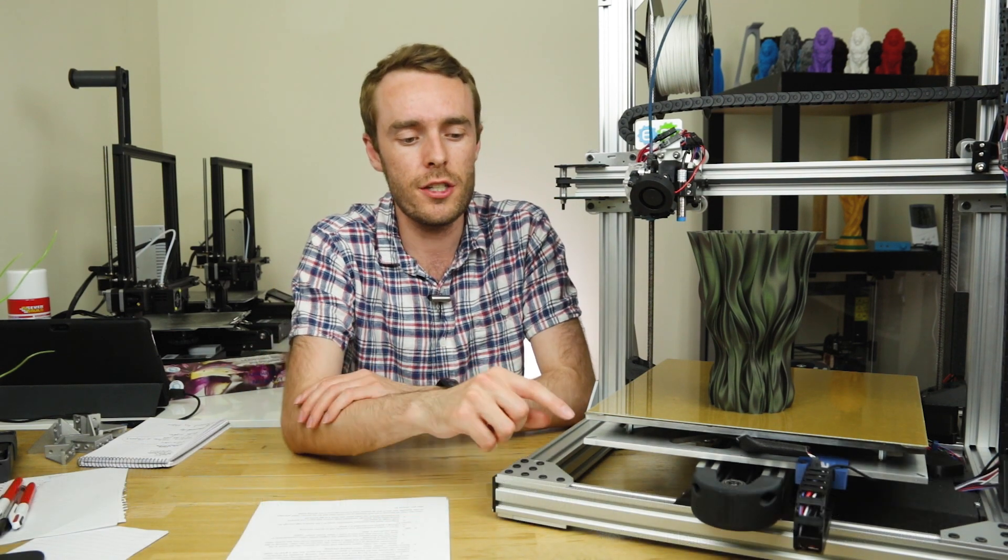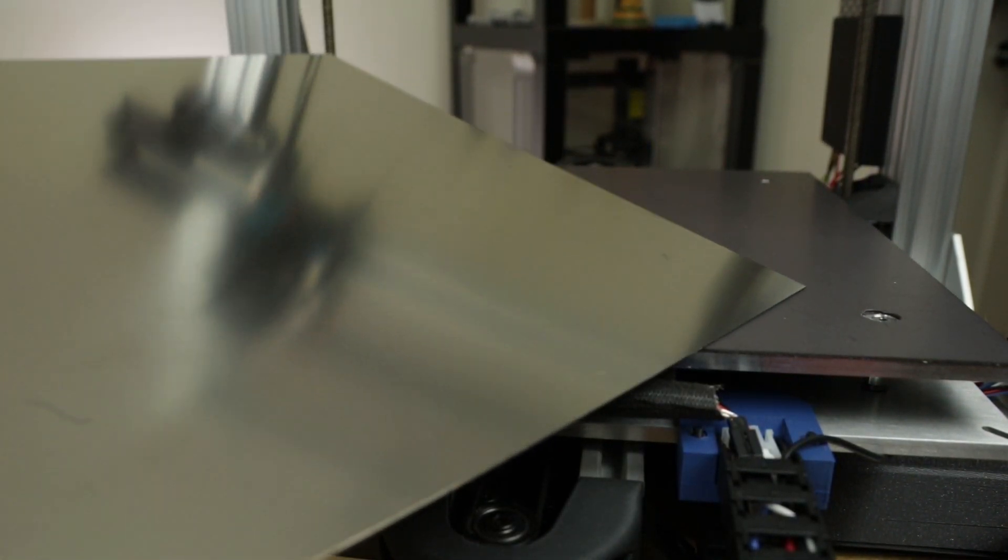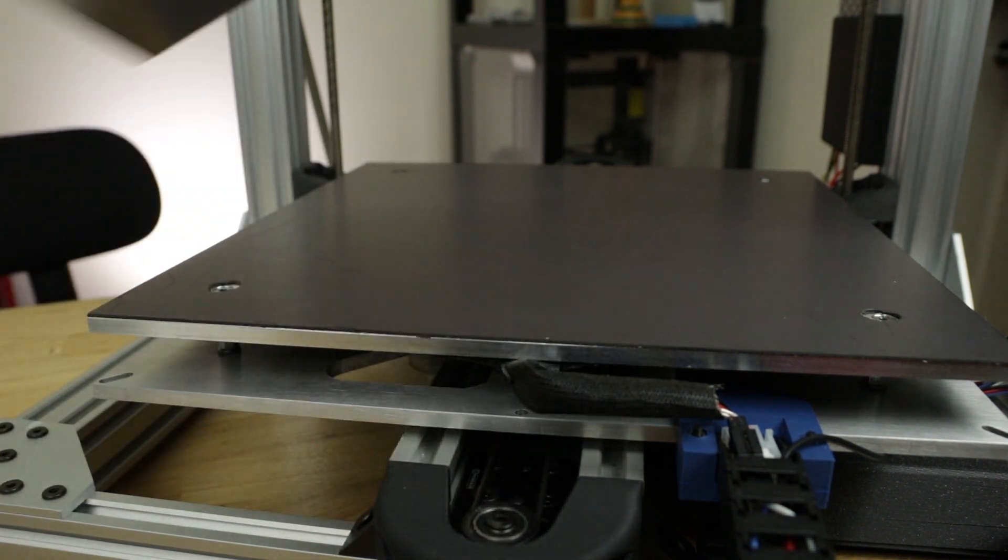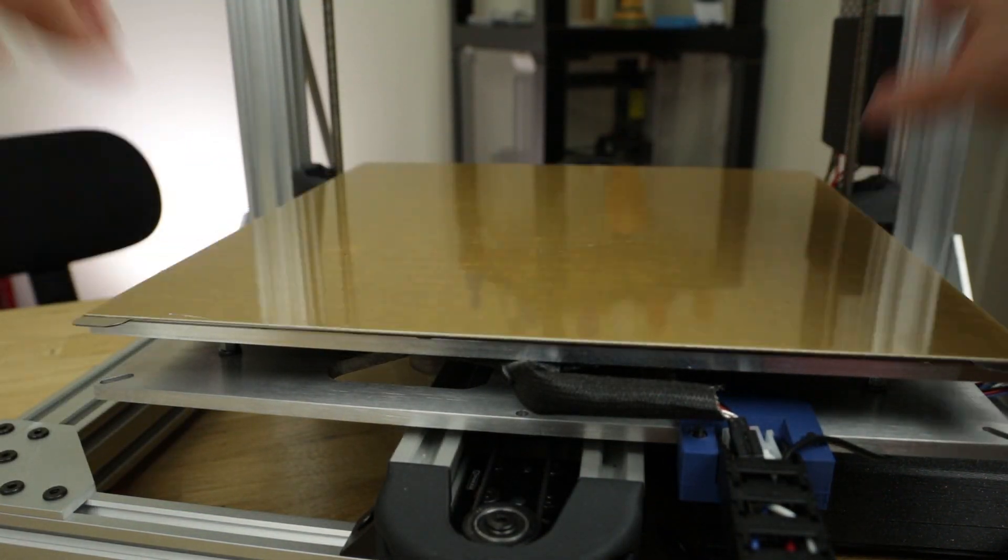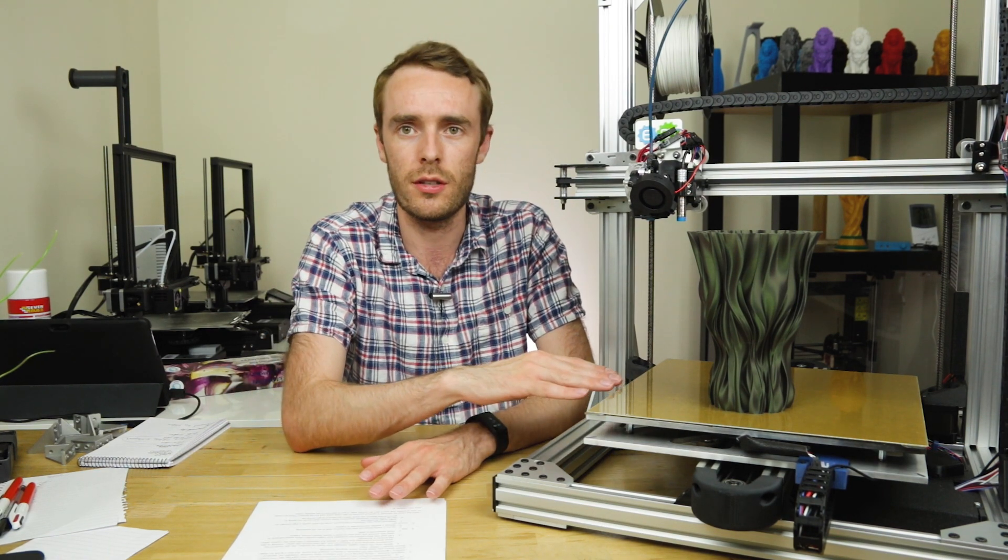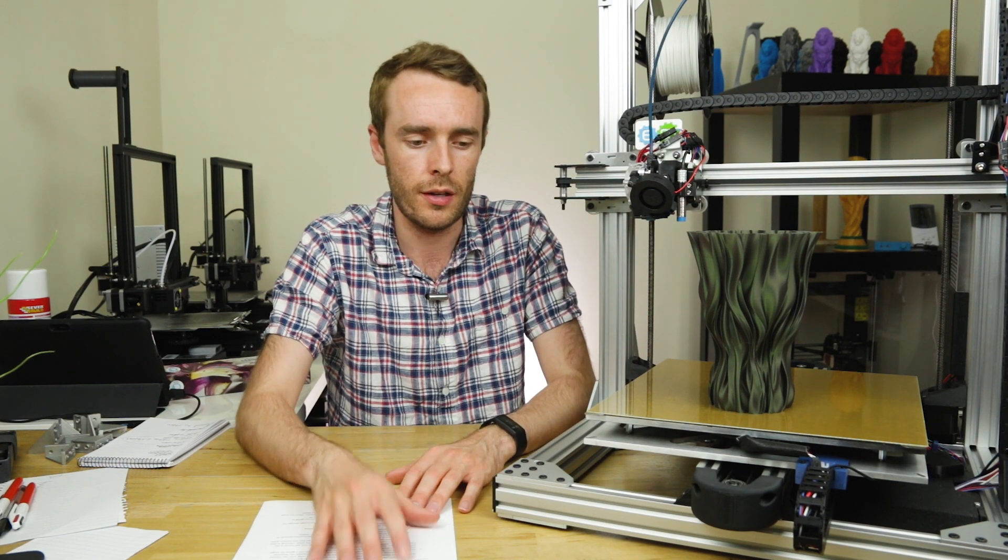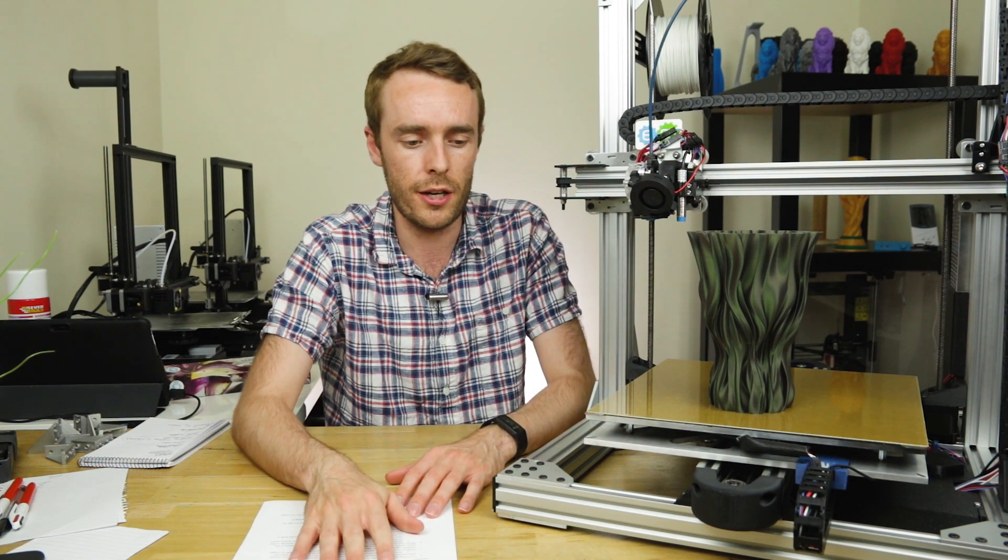On top of the magnetic sheet, we have of course the spring steel sheet. So spring steels are a special kind of category of steels that have a high tensile strength, meaning you can bend them a lot without actually causing any permanent deformation, which is great for this application because we want to be able to bend it a lot without any permanent deformation. We want to keep it flat and keep it consistent to the bed surface that we've got, but we also need to be able to flex it in order to get prints off, and so this works perfectly for this application.